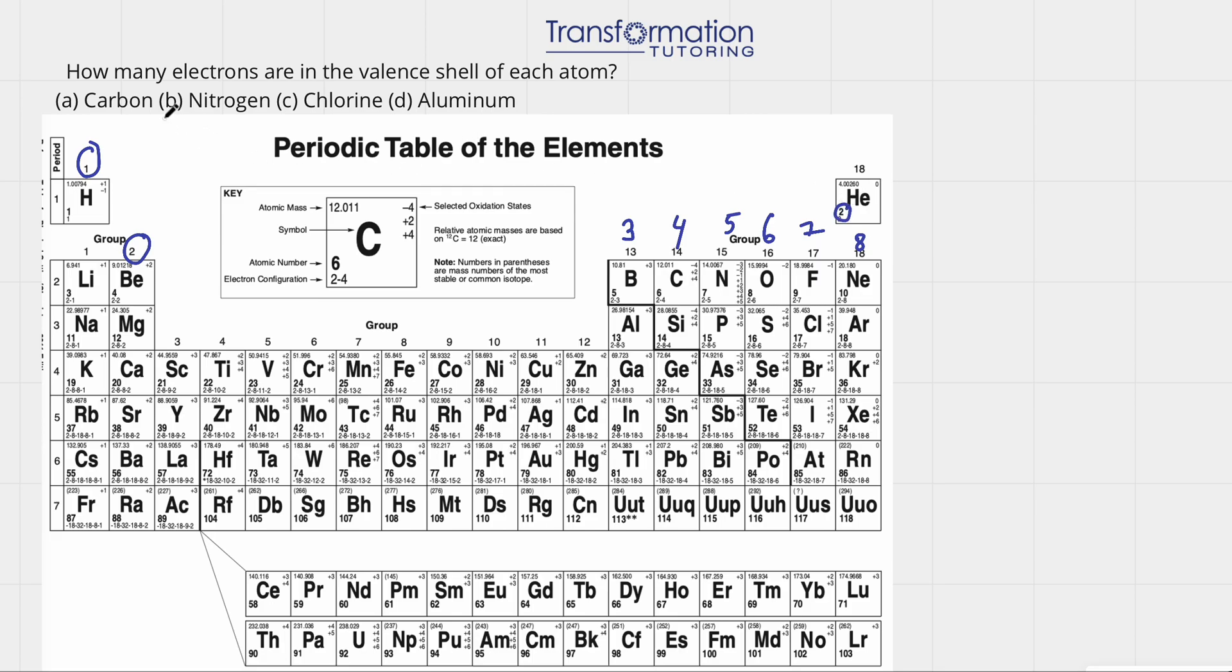Let's put our knowledge to test now. We have carbon. Carbon is here. What group is it in? It's in group 14, and it will have four valence electrons.